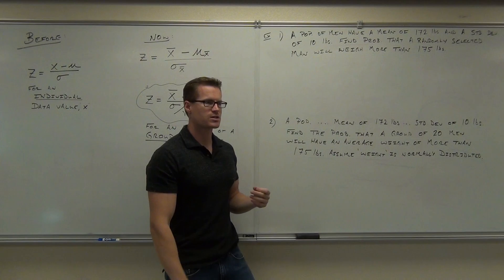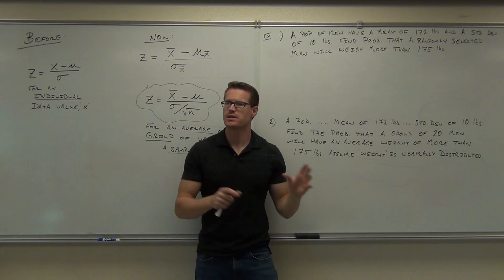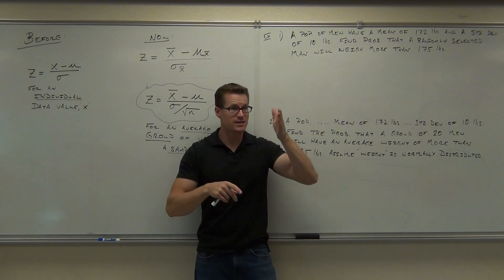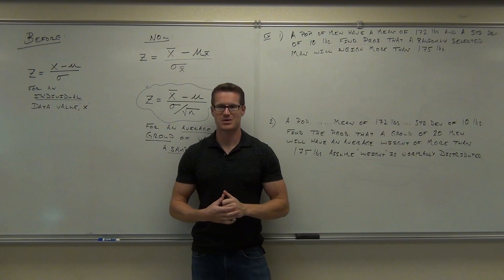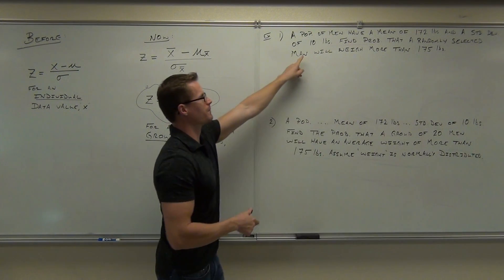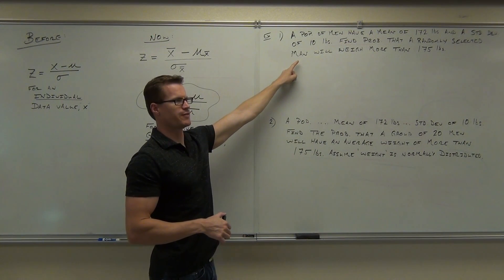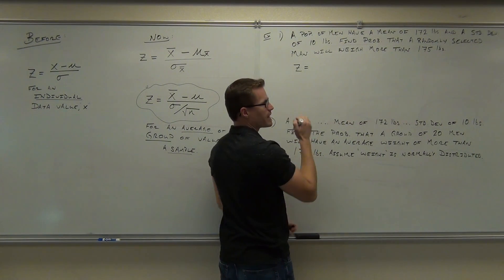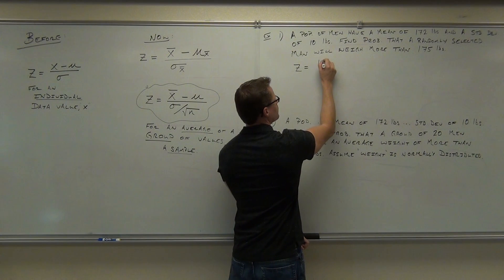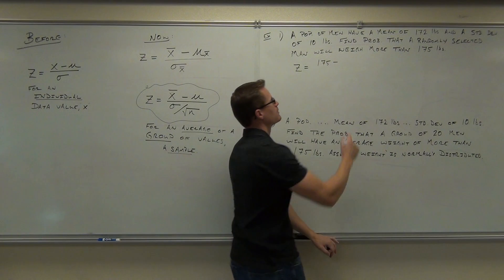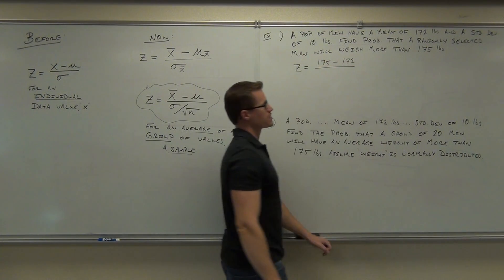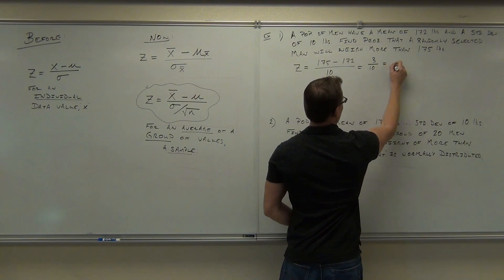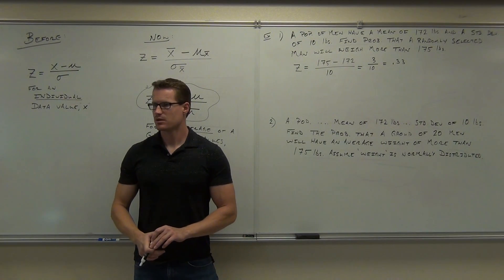Do you see the difference in the wording in these problems? The process is going to be identical — you find the z-score using one of those two formulas, draw a picture, put that z-score on the standard normal curve, shade a certain side, then look up the area. Number one is an individual, so we use the individual z-score formula. X is 175, minus the population mean of 172, over the standard deviation of 10 — that gives us 3 over 10, or 0.33. Let's draw our picture.